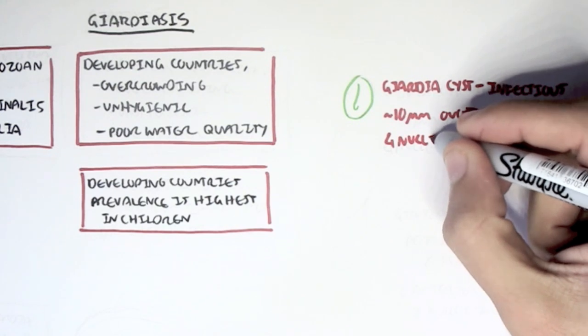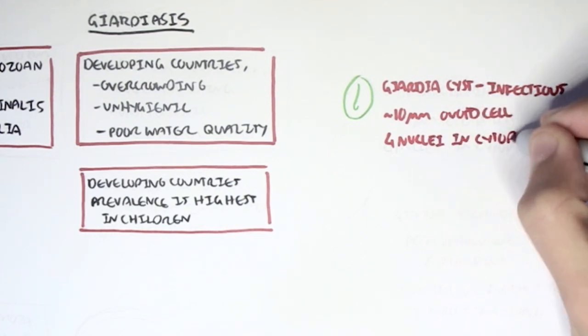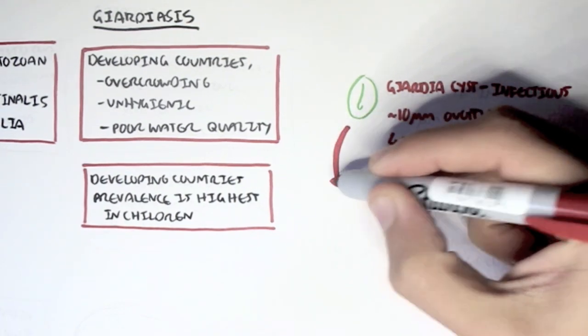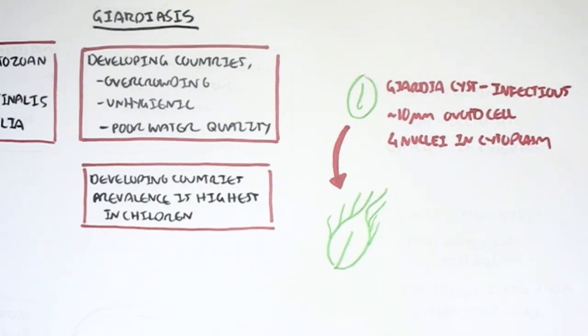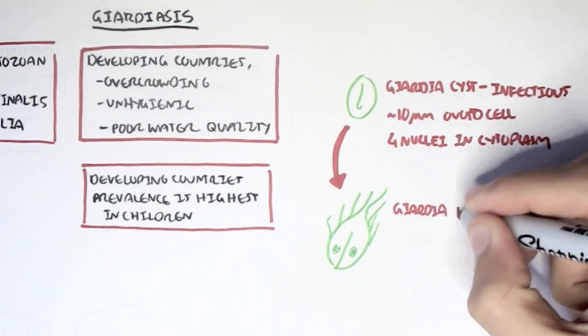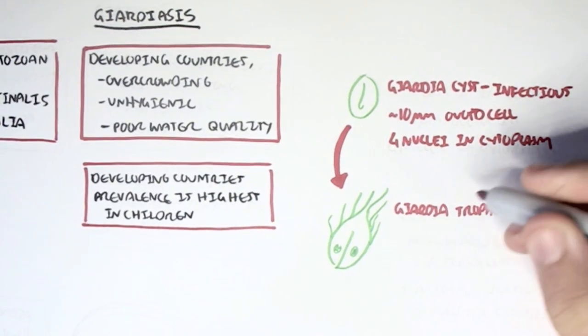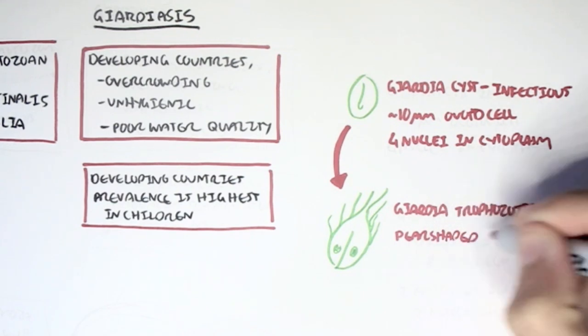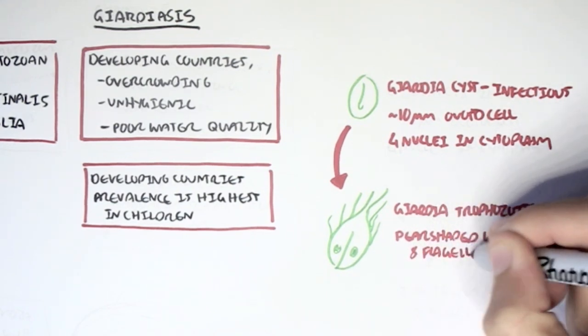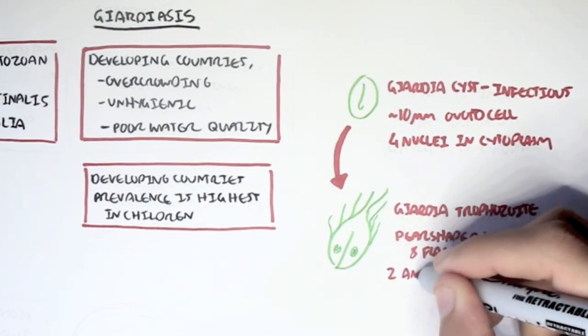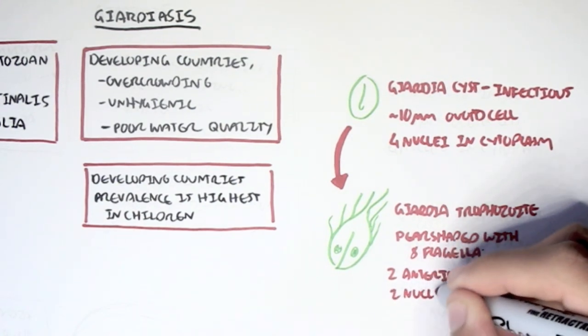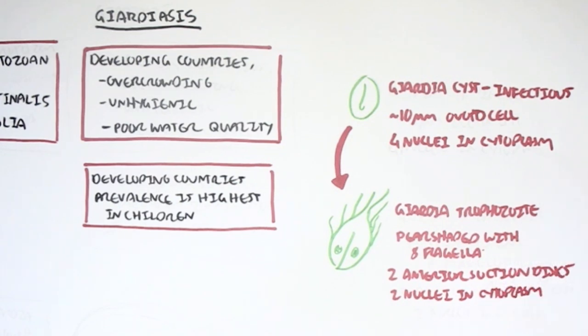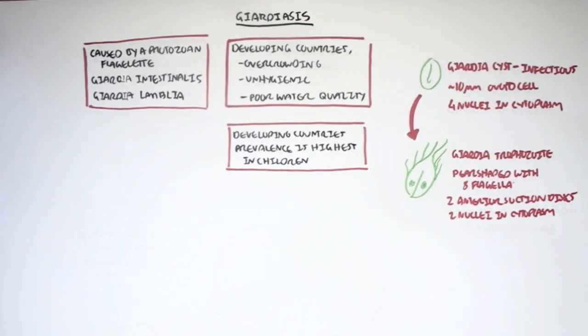It contains four nuclei in the cytoplasm. The Giardia cyst can become the Giardia trophozoite, which is the mobile form, the one that moves around. It is pear-shaped with eight flagellates, and thus it is known as a protozoan flagellate because it has eight flagellates. It contains two anterior suction discs, which allows it to attach to the mucosal surface of the intestines, and it contains two nuclei in the cytoplasm.